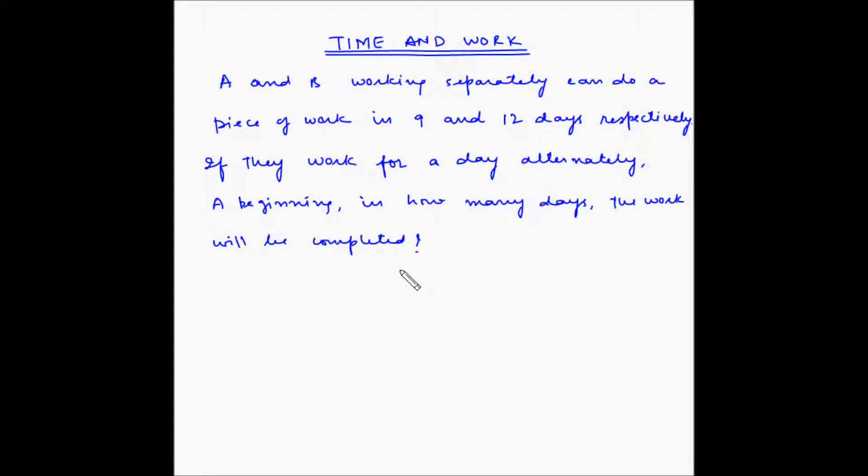Welcome to another example of time and work where two workers are working alternately. A and B working separately can do a piece of work in 9 and 12 days respectively. If they work for a day alternately with A beginning, in how many days will the work be completed?